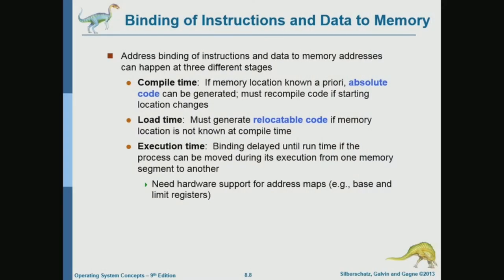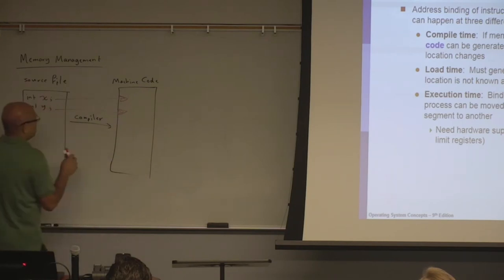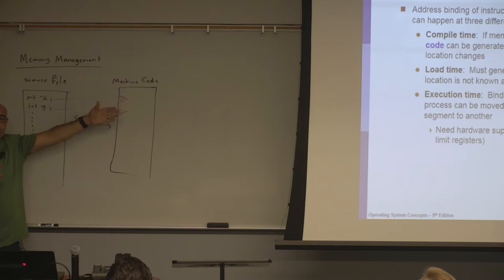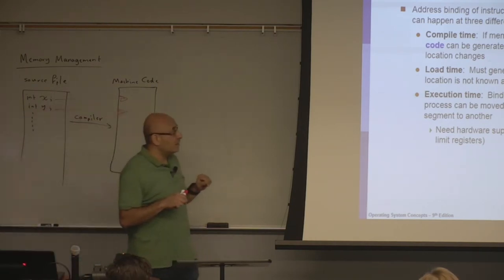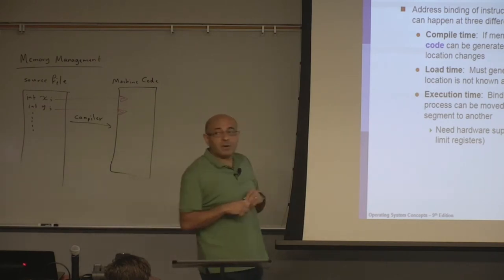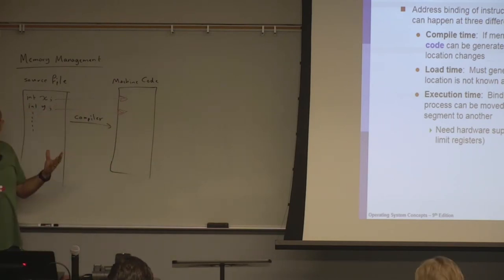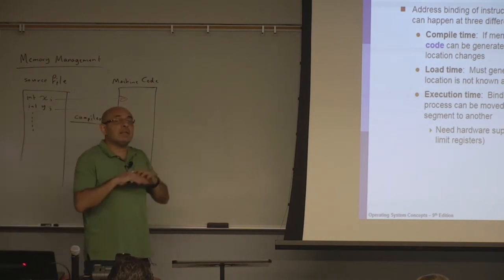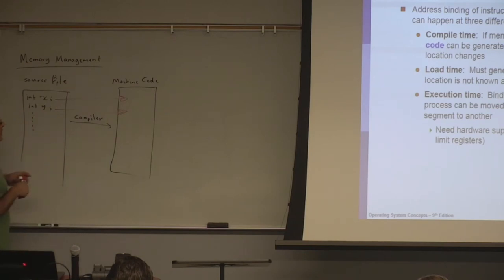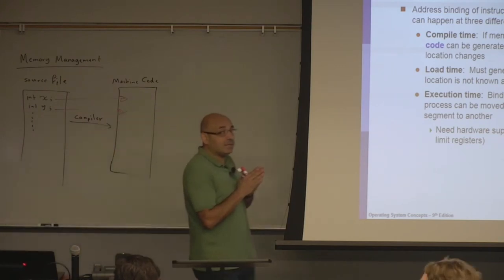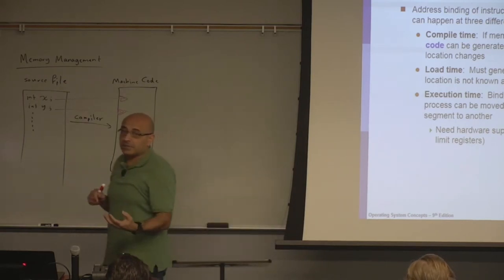Compile-time binding is a concept we need to understand, but modern systems do not do it — it was probably done in the DOS operating system where addresses in the machine code are absolute addresses. What compilers normally generate is relocatable code. Relocatable code means for each variable it generates an offset relative to some start address or base address. That base address is either determined at load time or at execution time.